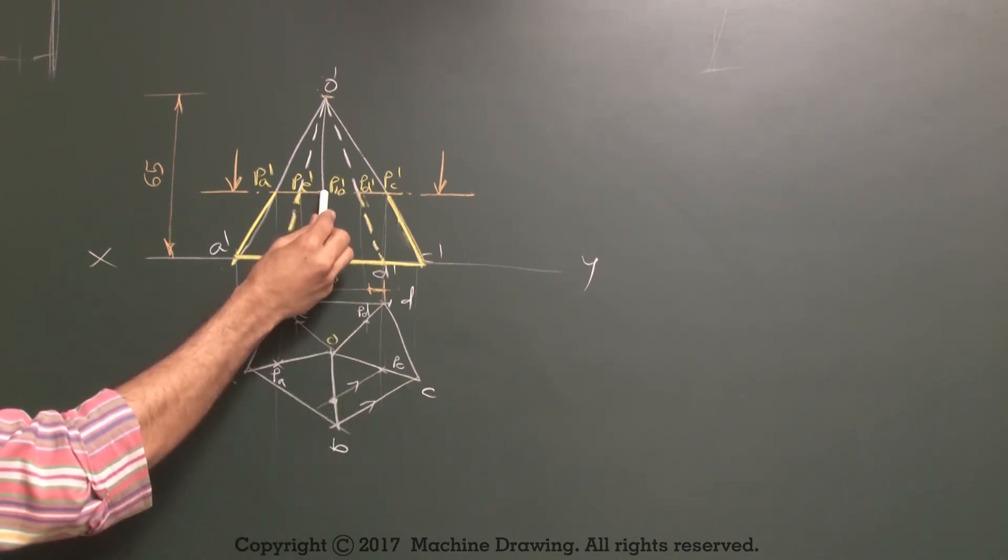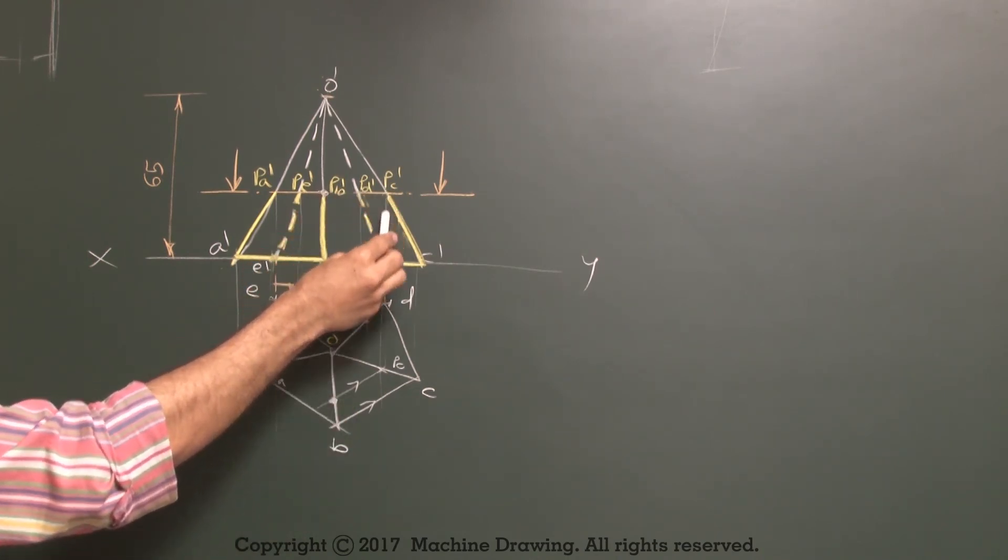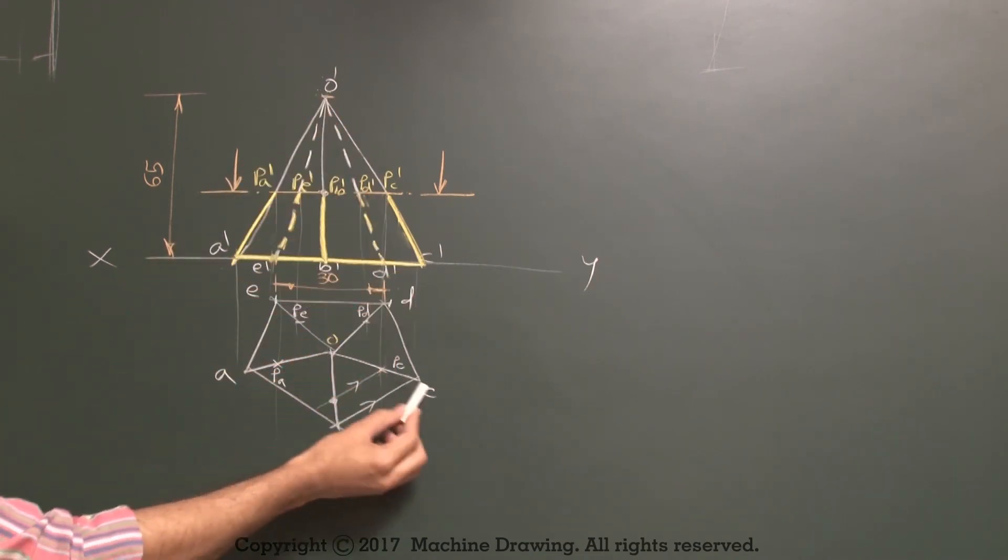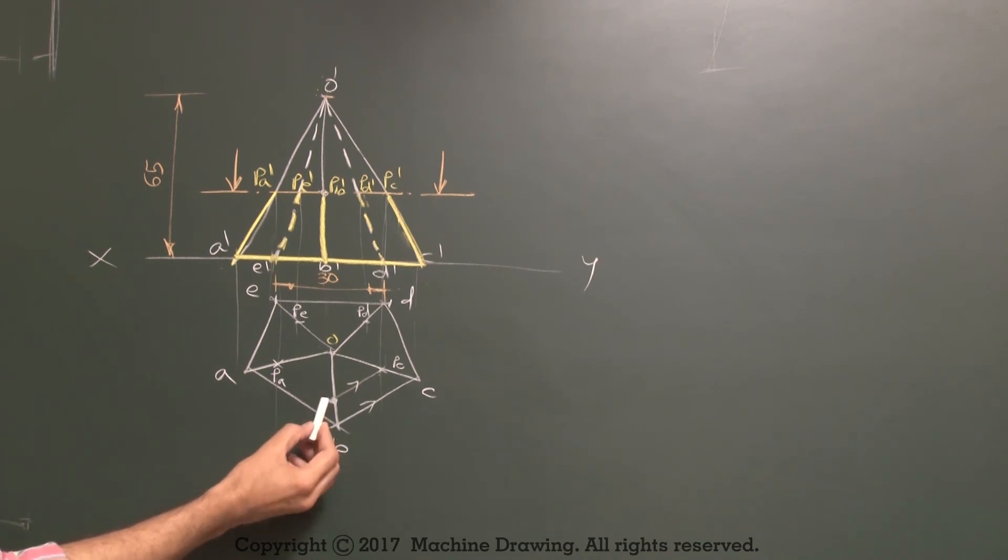First we will take from here to extreme edge. Then from there we will go down. So since we have taken on O dash C dash, it will be on OC. And from there we will take parallel to base. So wherever we will cut, that will be point PB.